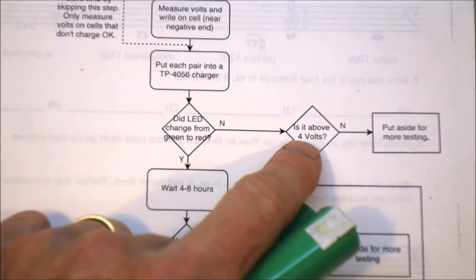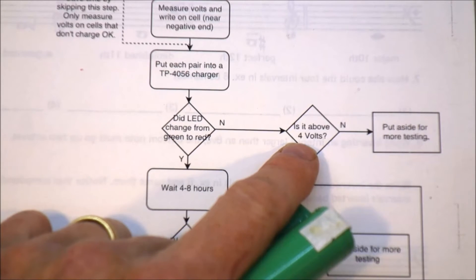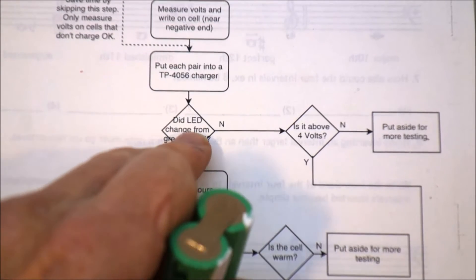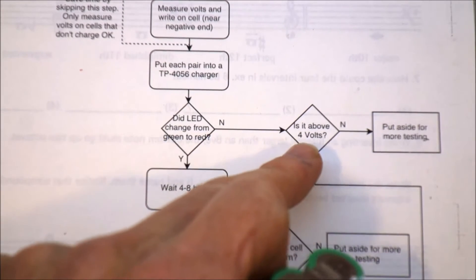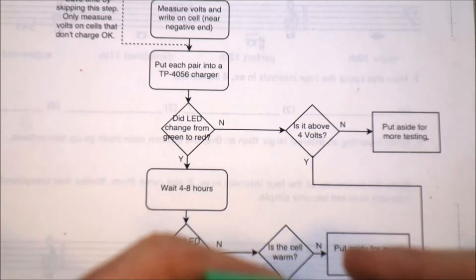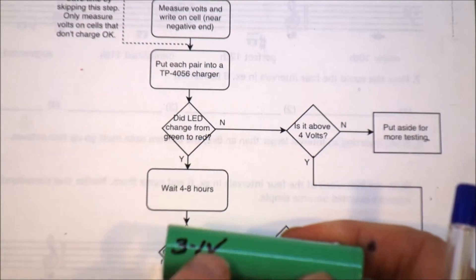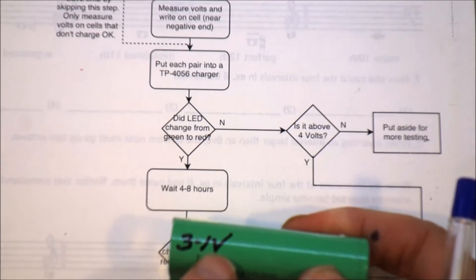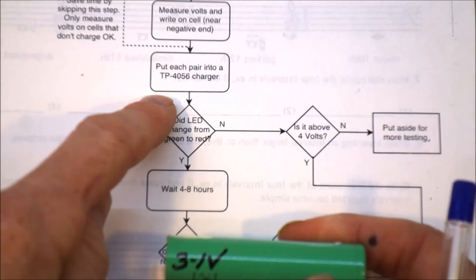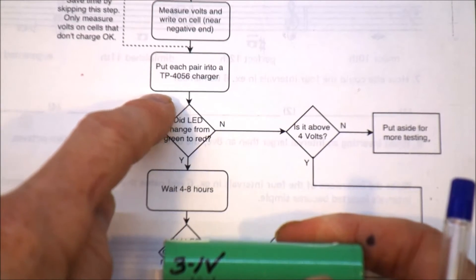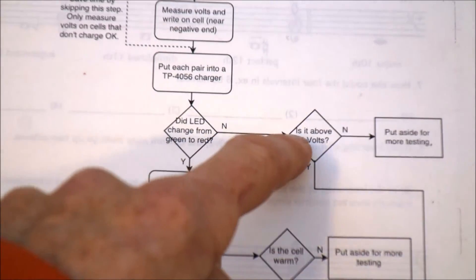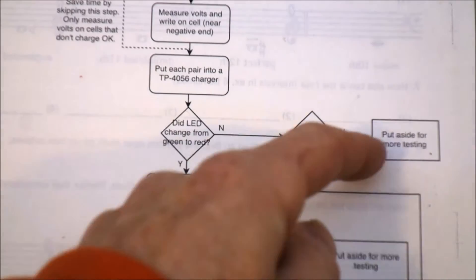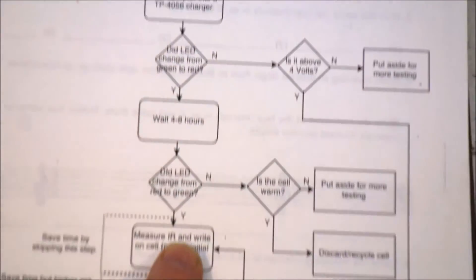If it stays green, then there are two possible reasons. One is, it is so dead that the charger can't do anything with it. The other possibility is that the voltage is actually so high that the charger won't charge it. And generally, somewhere over 4 volts, the TP4056 module won't charge your cells. And in that case, I can skip the whole charging step and go straight to a step further down here.